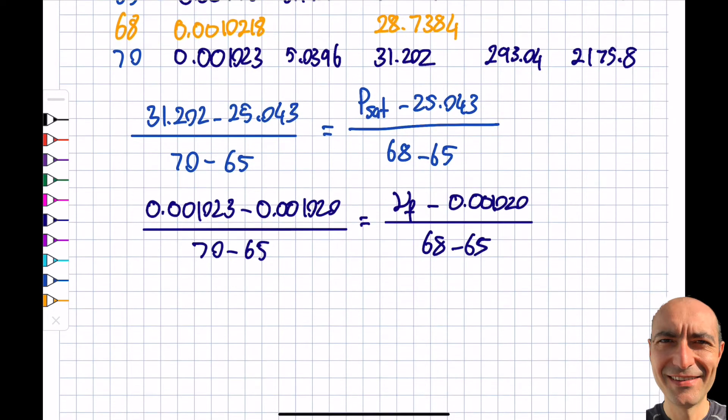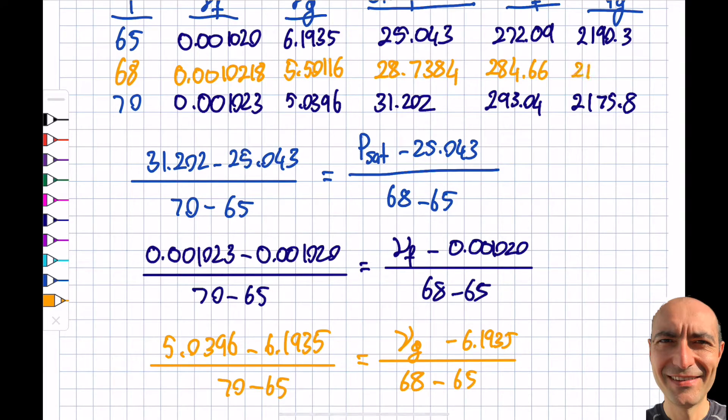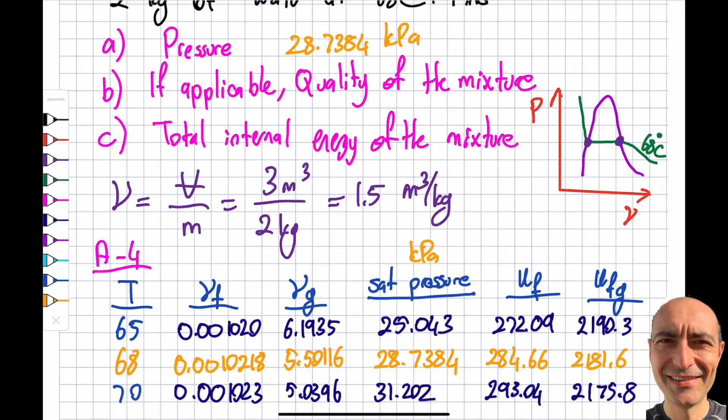I can do the same for this one, and I want to show you for a reason because now this is going to end up with negative value, but the formula will still work. So you will do this. 5.0396 minus 6.1935 divided by the same thing, 70 minus 65 will be equal to, you see, when I do it myself, if I'm not teaching, I usually do this, minus 65, the same thing, minus 6.1935. I simply feel that 68 is over here, and that will be whatever I'm interested in. In this particular case, specific volume of the saturated vapor. And if you just punch this in the calculator, mathematics will help you out. So you will get this to be 5.5116. I need UF too, so that's going to be 284.66. This will be 2181.6. And I really did this myself, by the way, because I prepared this question, so this was real fun. And I hope I didn't make a mistake somewhere. We'll find out, I guess.